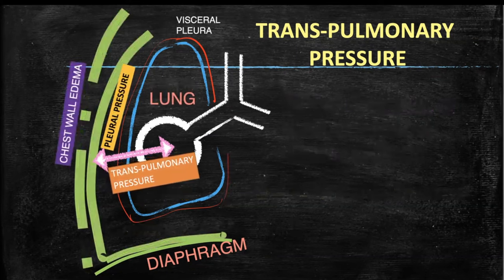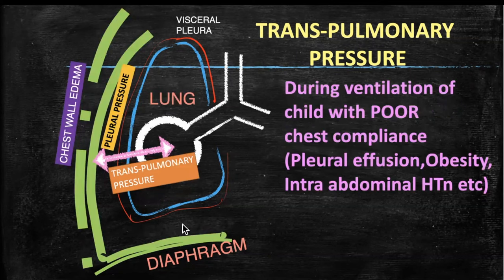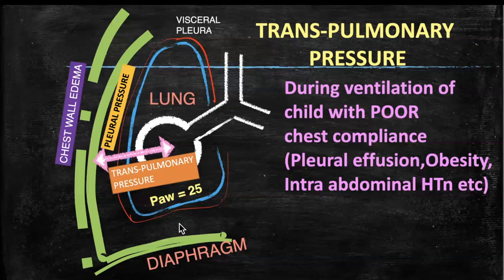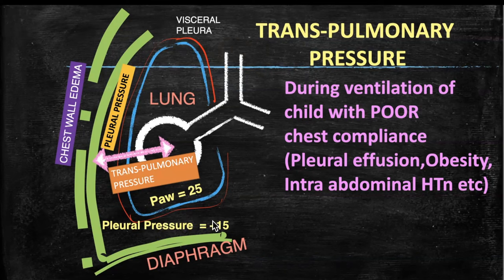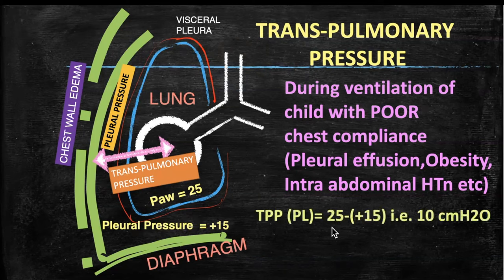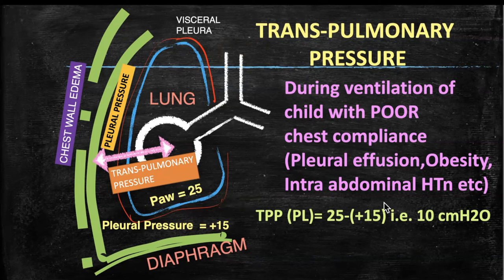However, if there is chest wall edema, obesity, intra-abdominal hypertension, or severe ascites — all causing poor chest wall compliance — even though your plateau pressure displayed is 25, you will have a positive pleural pressure of plus 15 centimeters of water. Then trans-pulmonary pressure = 25 minus (+15) = 10 centimeters of water. The plateau pressure shown on the ventilator is 25, but the actual pressure used to expand the lungs is just 10 centimeters of water.